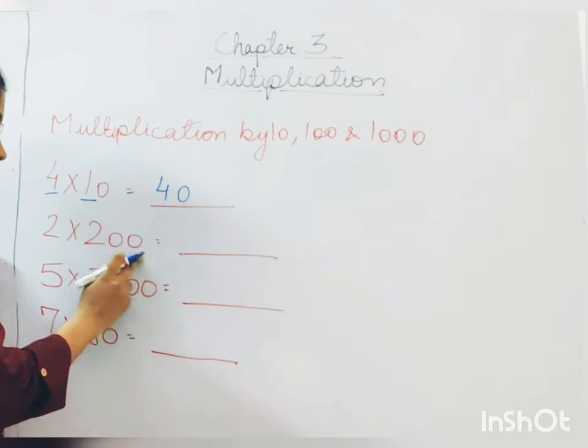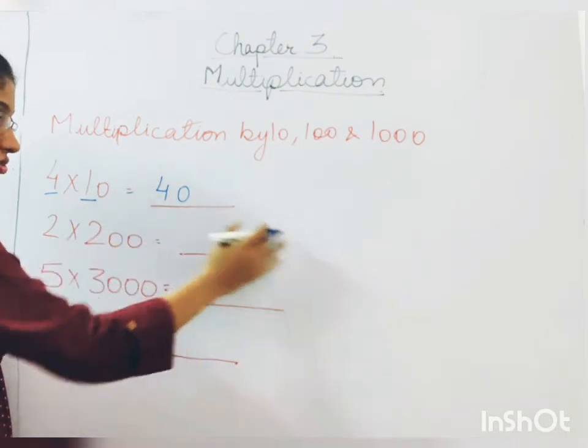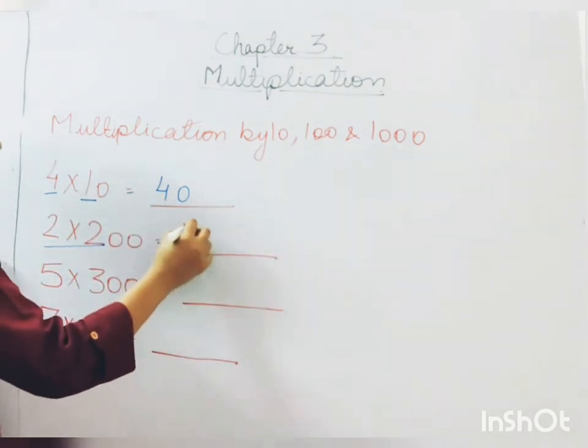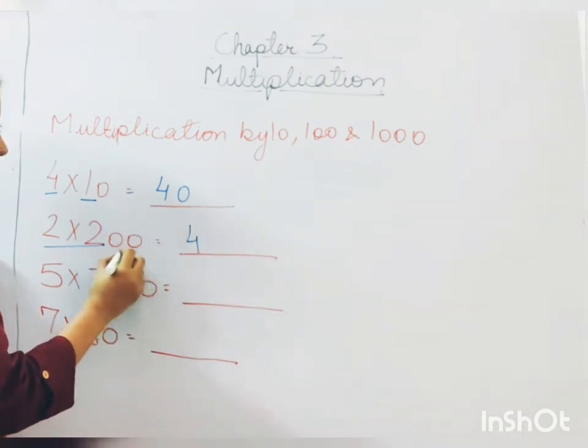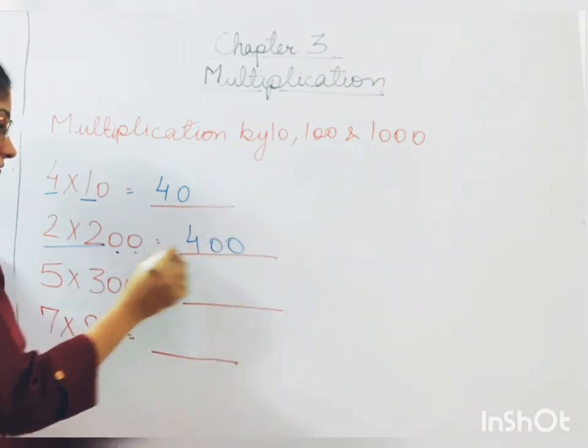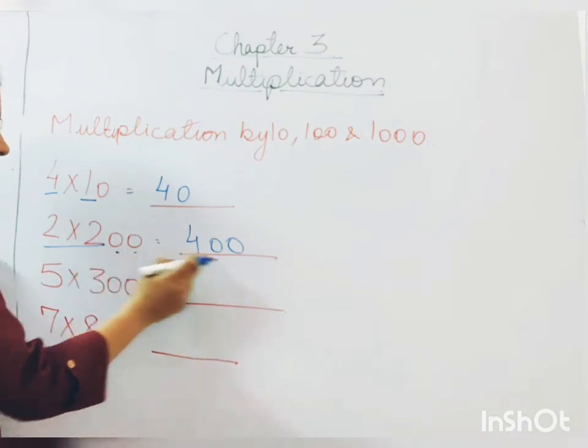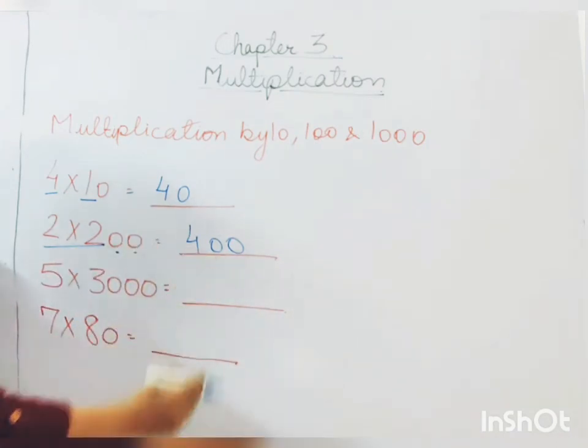Let's have a look at the second one. 2 multiplied by 200. So you don't need to do the multiplication. Just multiply 2 by 2, 4 and how many 0s are here? 2. So just put 2 0s, 2 multiplied by 2, 4 and 2 0s. So 2 multiplied by 200 will be 400.